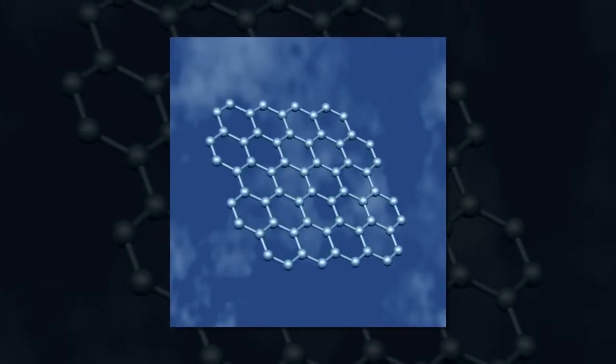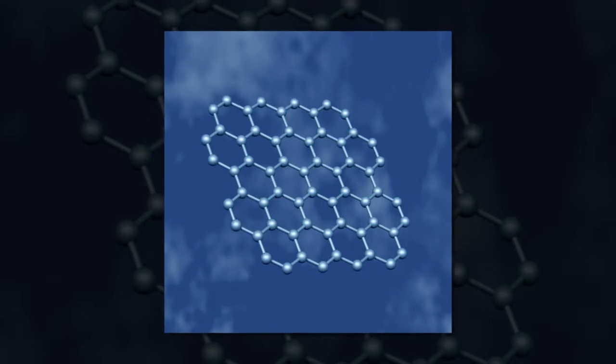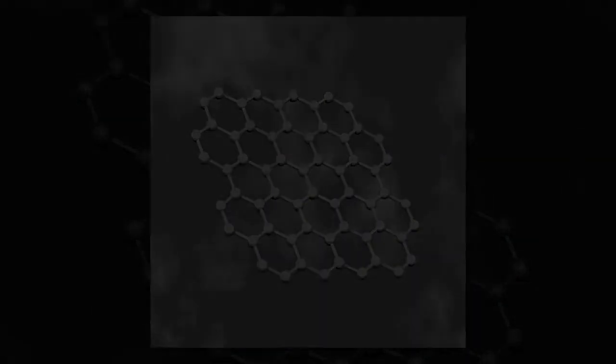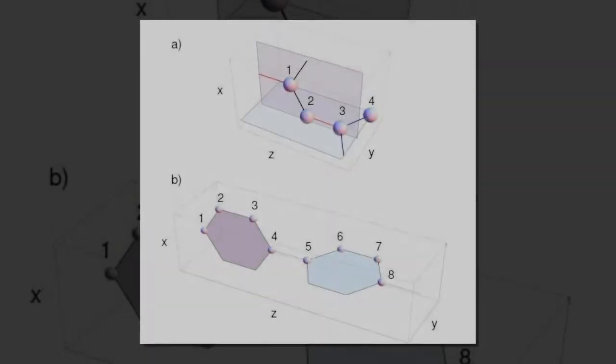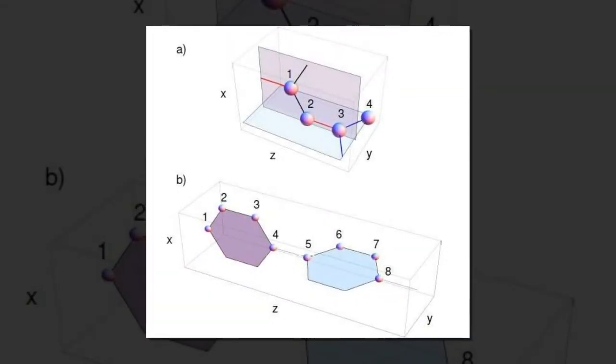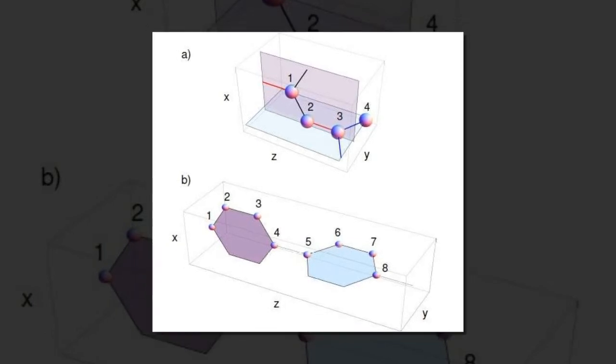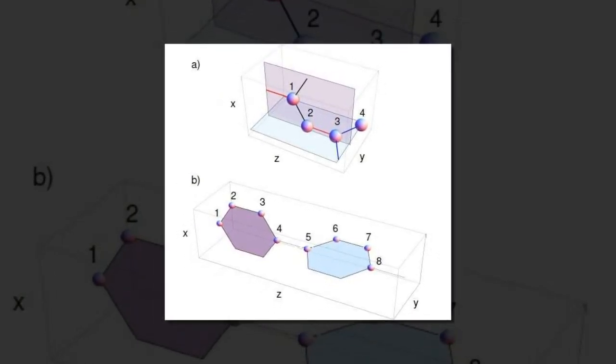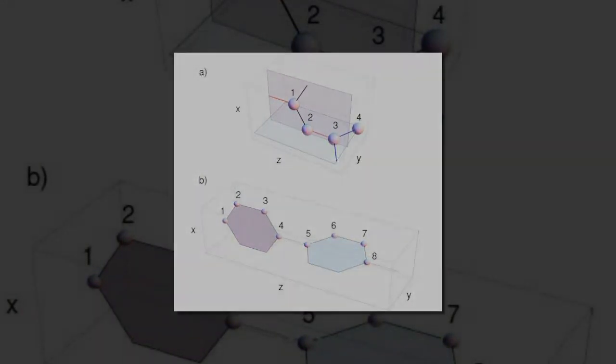Here, the scientists investigated what happens when the Dirac points in a carbon-based planar trigonal structure are extended into three-dimensional space to form Dirac loops. Dirac loops are not as well understood as Dirac points because, unlike Dirac points which share similarities with relativistic electrons, Dirac loops do not have a relativistic analogue.